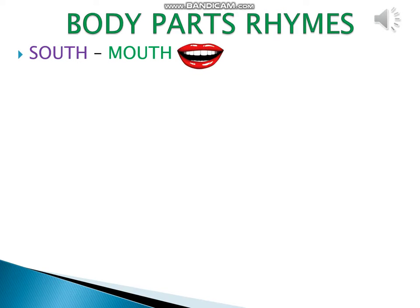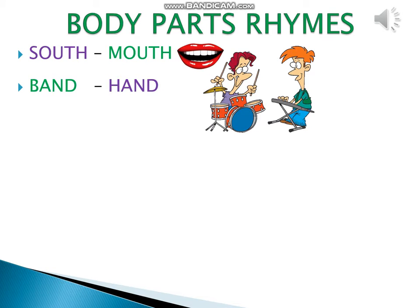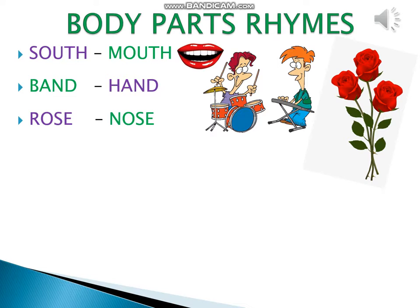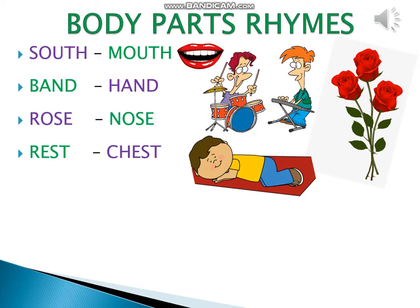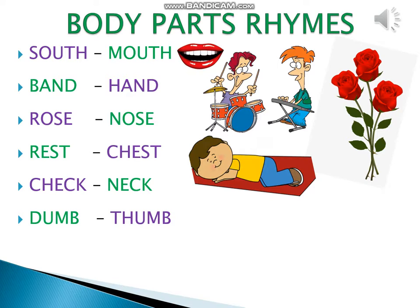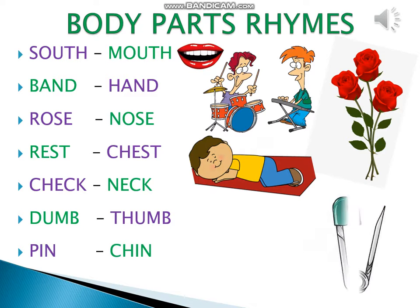Rhymes help us to understand various body parts with ease. Let us discuss these different body parts with rhyme words: South–Mouth, Band–Hand, Rose–Nose, Rest–Chest, Check–Neck, Dumb–Thumb, Pin–Chin, Warm–Arm.